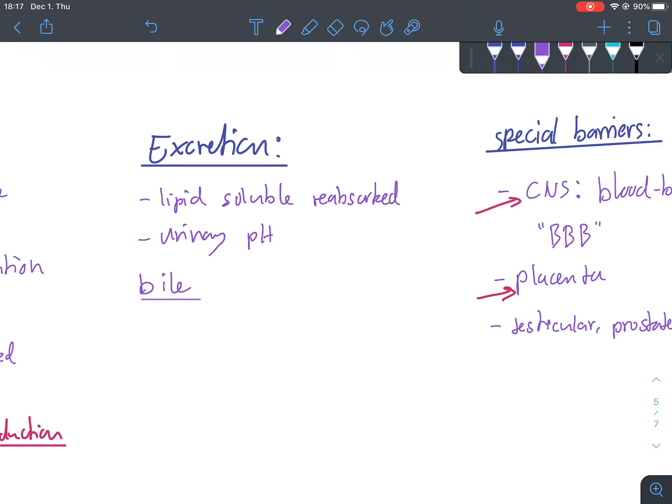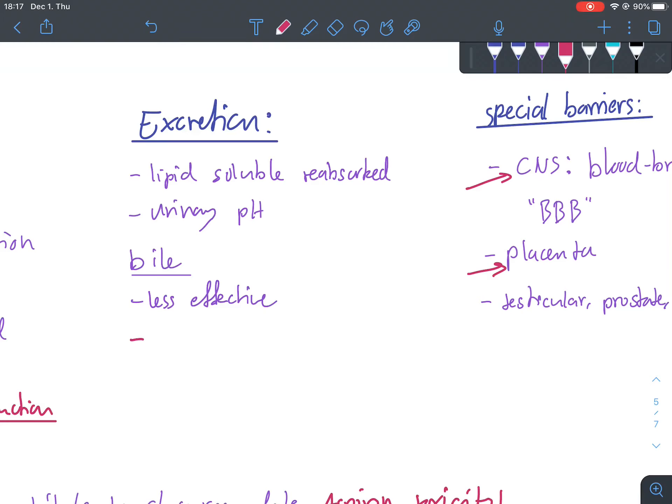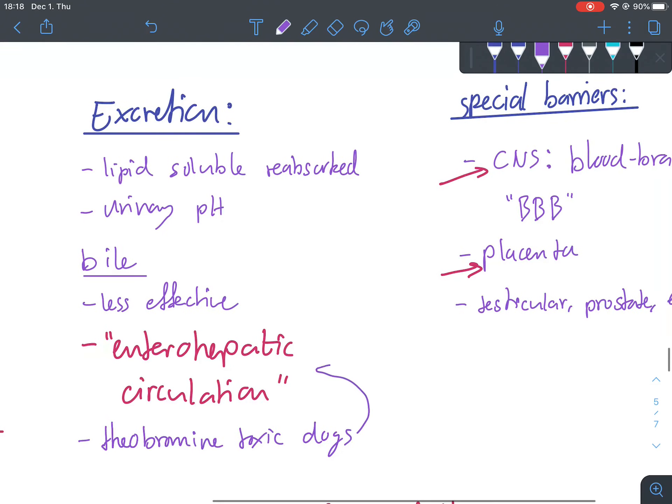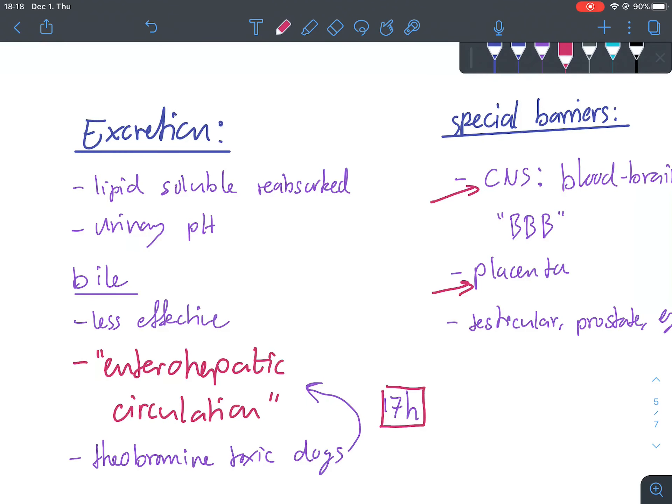So the bile can actually excrete, but it's less effective than the kidneys. Why, you might say? Well, because afterwards, this can still be reabsorbed in the intestines. So we actually might be excreting it and then absorbing once again this same medication. And what we call this is enterohepatic circulation. This is the reason that chocolate, which contains theobromine, is so toxic to dogs, because it is actually excreted through the bile and then it enters the enterohepatic circulation. And because it keeps kind of going around and around instead of just leaving the body, the half-life for theobromine is actually 17 hours in the dog. So that's a long time for a lot of this medication to accumulate and cause toxic effects.